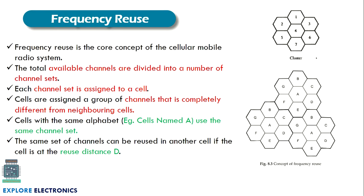We need to understand the frequency reuse concept. Frequency reuse is the concept of a cellular mobile radio system where the total available channels — say 1000 different frequencies — are divided into channel sets. A set of 10 frequencies, for example, is assigned to one particular cell; the next set to the second cell, and so on. All different cells in a cluster are allocated a unique set of channels, so cell 1 has one set of frequencies, cell 2 a different set, and so on.